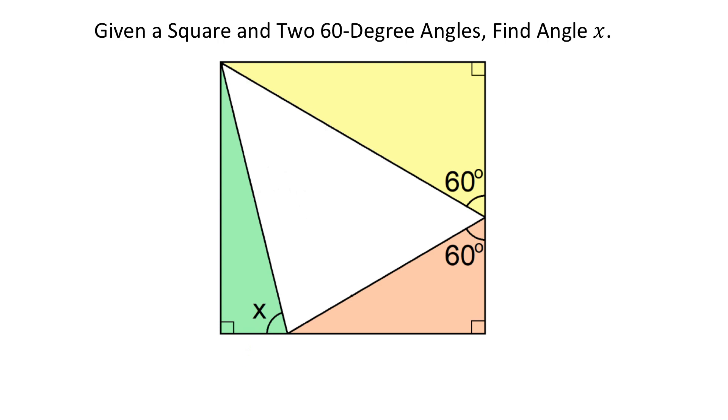So, first we will start by finding as many angles as we can. If each of these angles measures 60 degrees, then this one is also 60 degrees, because together they have to be 180 degrees.